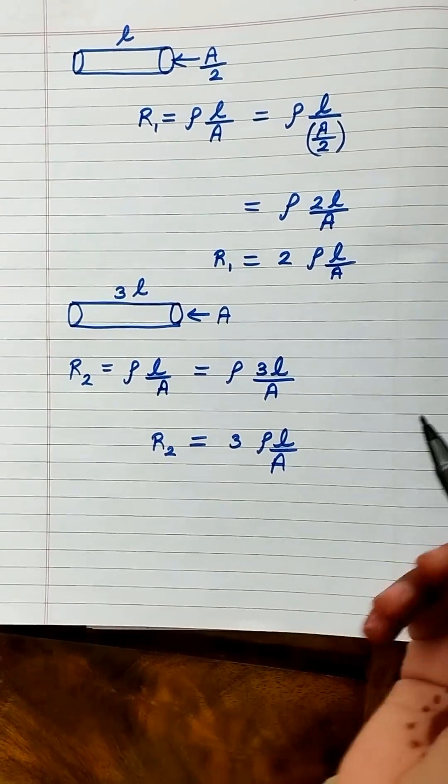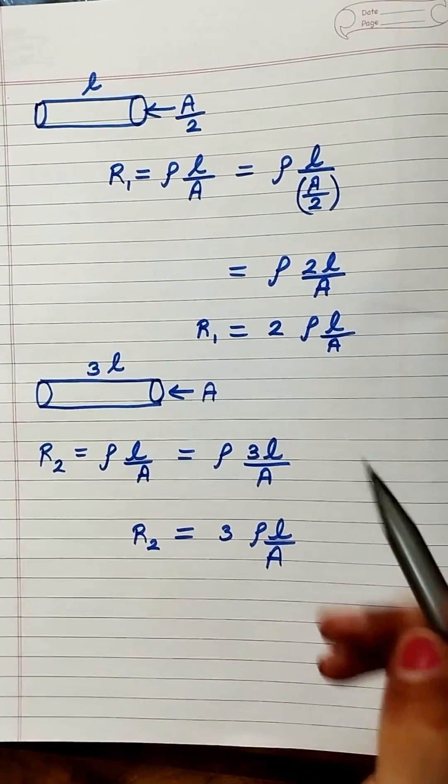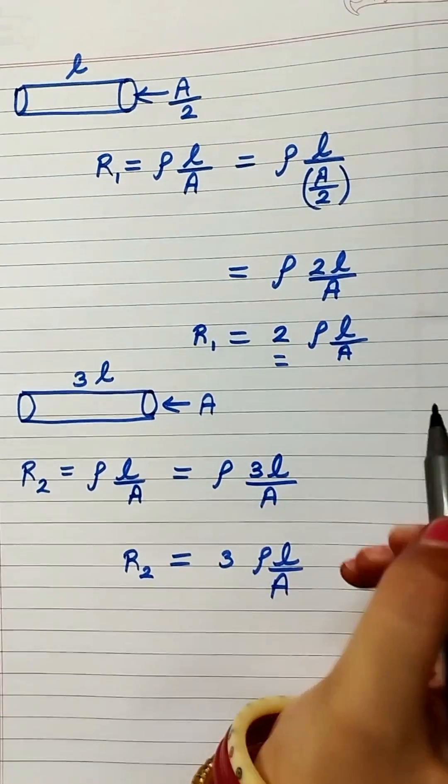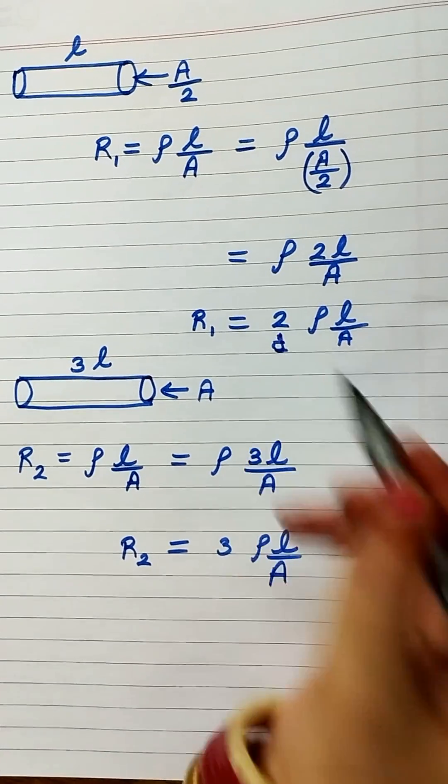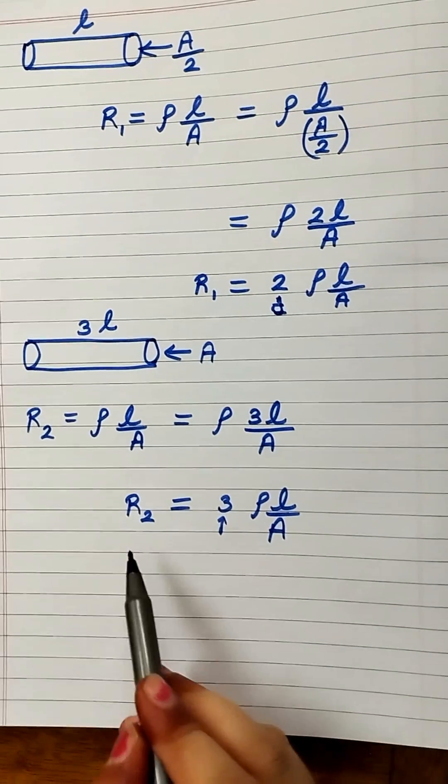Which conductor has the higher resistance? You can see the coefficient is 2 for the first conductor and 3 for the second. So the resistance will be higher in the second conductor.